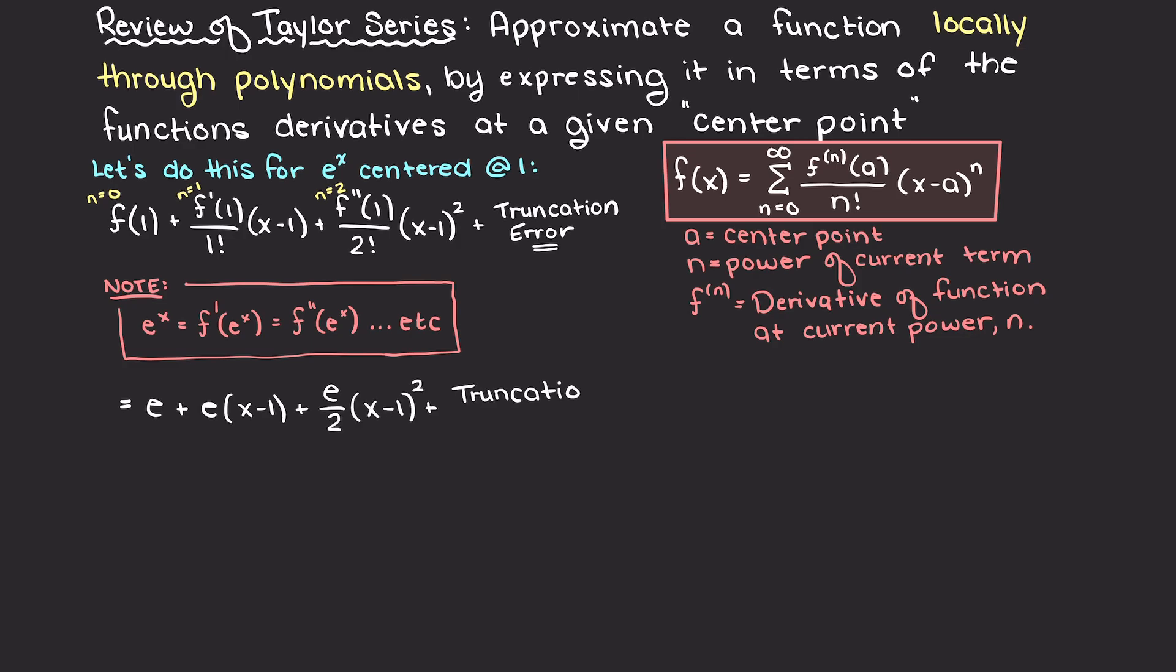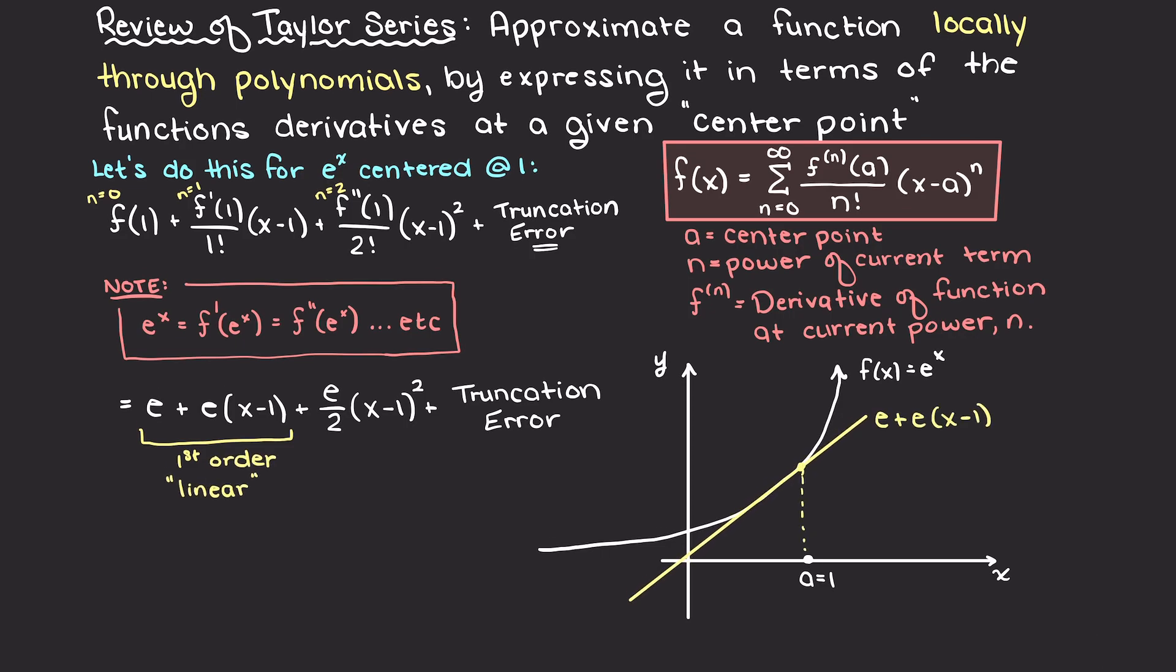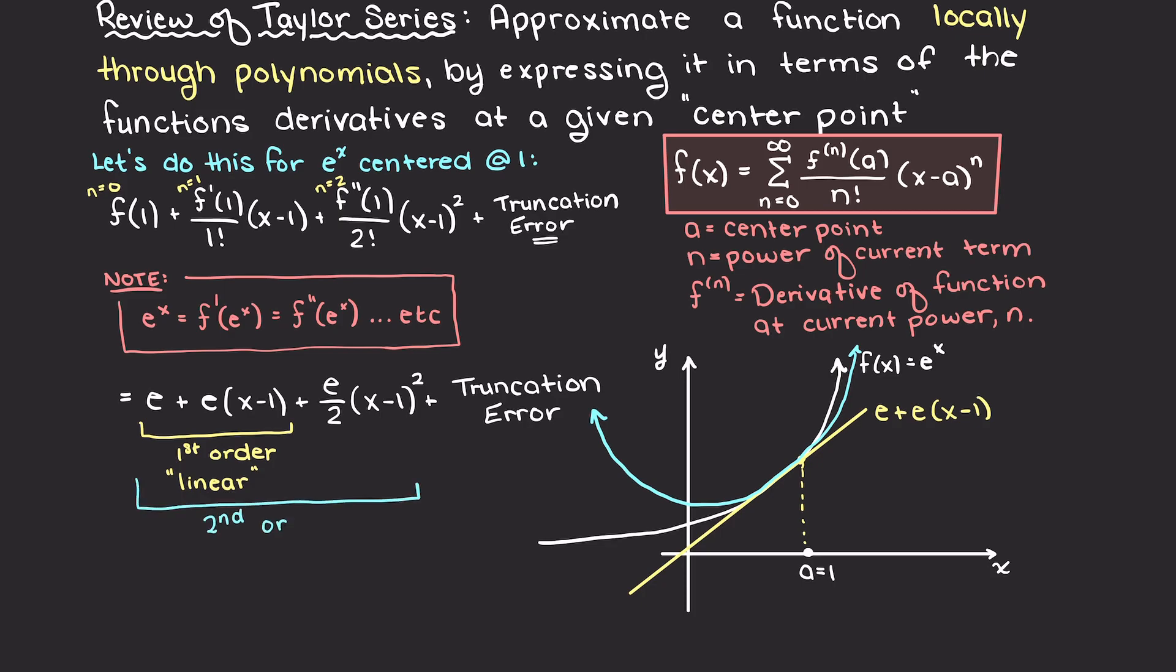Let's plot our actual e to the x function, and then the first and second order Taylor series approximations at a center point of 1. The first order expansion will just be the first two terms here, and this is simply a straight line. Secondly, our second order expansion is an even better approximation as it uses a parabola. If we were to continue, a third order would give you a cubic. As you can see, within a small range around our center point, we have a very good approximation of our function. However, when we deviate too far from our center point, our approximation becomes worse and worse.